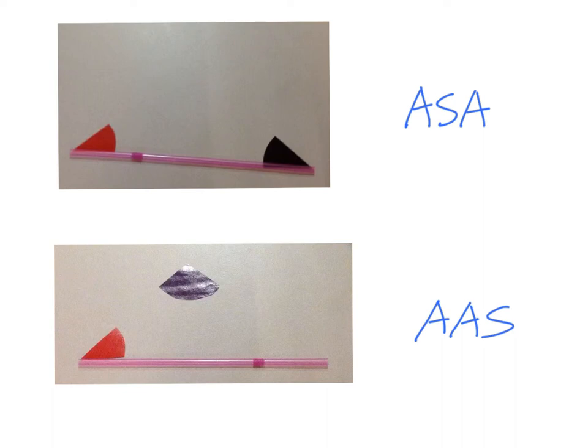In this diagram we have AAS. This is the congruent triangle. For AAS the pair of equal angles is on this side and the equal side is on the other side. This is the congruent triangle.